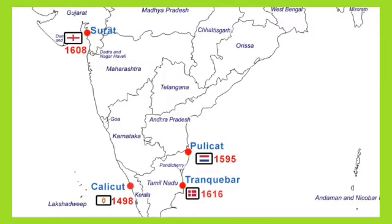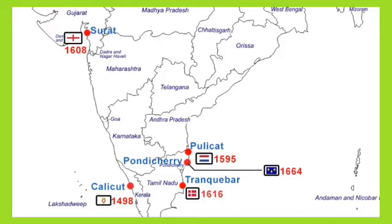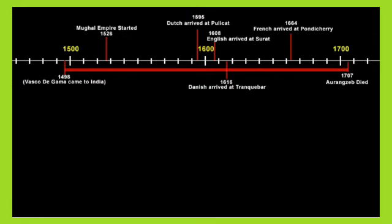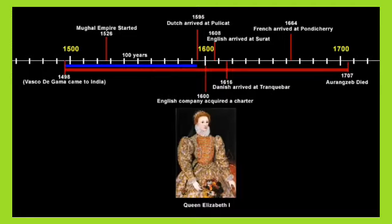They came actually for doing trade — means business, selling and purchasing. But from that concept, they finally occupied our India. So from trade to territory, they started ruling here — that is what we call territory. Actually, up to Aurangzeb in 1707, our India under the Mughal rule was very strong. Aurangzeb was the last powerful Mughal ruler, but after his death all weaker rulers came.